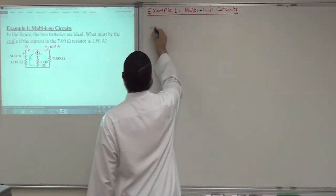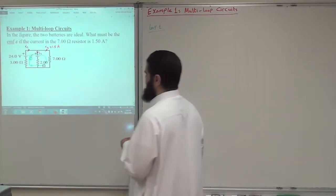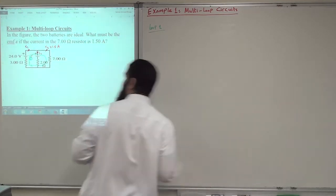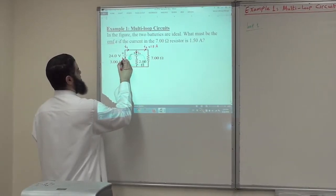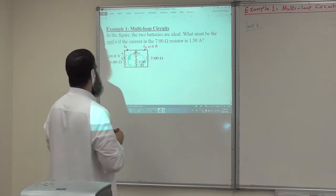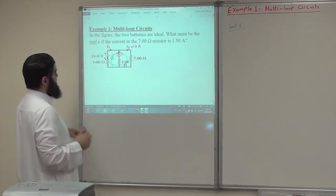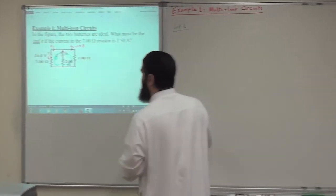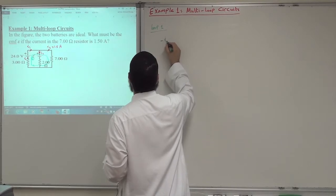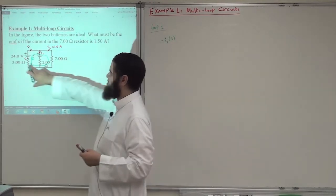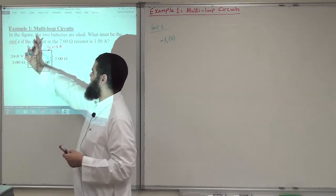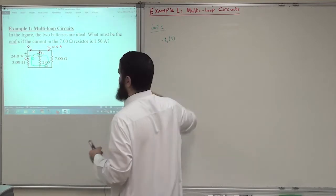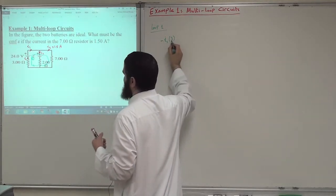For loop 1, if I start from here, I notice the current I1 is going up — this is my assumption. Passing through a resistor with the current, you will experience a potential drop. How much is the potential drop? It is minus I1 multiplied by 3. So for the resistor, we look at the direction of the current. Moving with the direction of the current across the resistor gives a potential drop equal to IR, so it is minus I1 multiplied by 3 ohms.